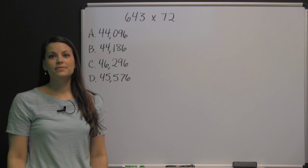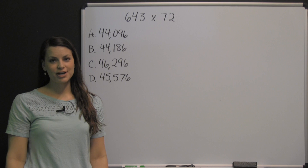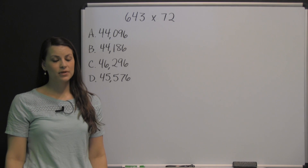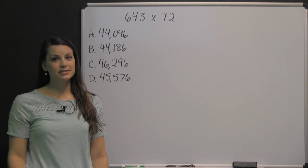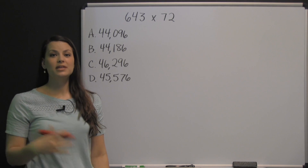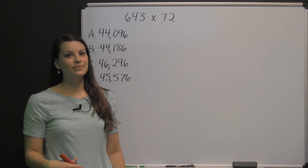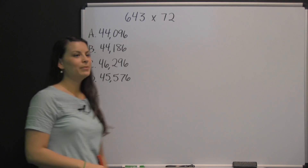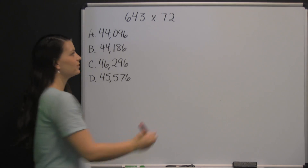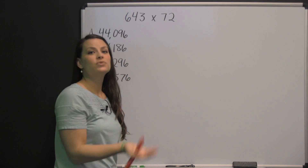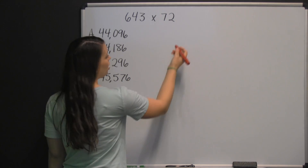Here's an example problem you will see on the mathematics computation portion of the TABE exam. For this section, you will need to work these problems without a calculator, though you will be given scratch paper. Let's see how to work this problem: 643 times 72. No matter the order it's written in, I would always put the number with more digits on top.